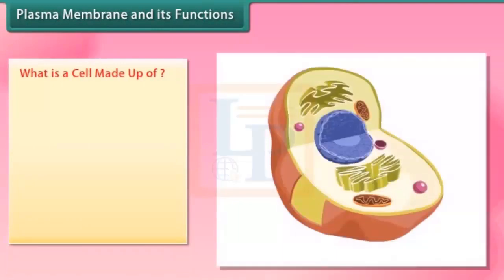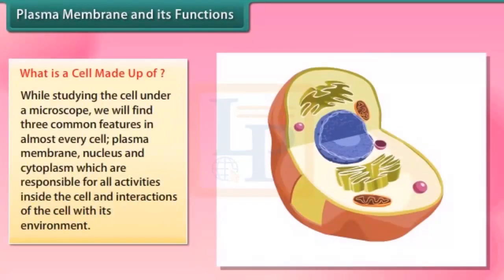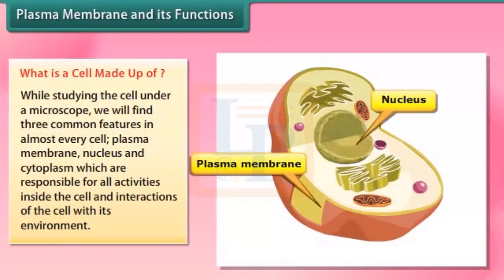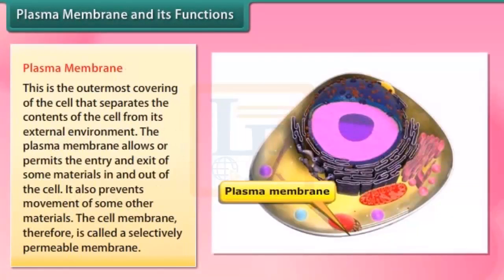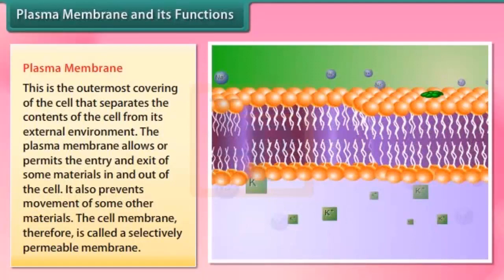What is a cell made up of? While studying the cell under a microscope we will find three common features in almost every cell: plasma membrane, nucleus and cytoplasm. These are responsible for all activities inside the cell and interactions of the cell with its environment. The plasma membrane is the outermost covering of the cell that separates the contents of the cell from its external environment. It allows or permits the entry or exit of some materials in and out of the cell, and also prevents movement of some other materials. The cell membrane is therefore called a selectively permeable membrane.